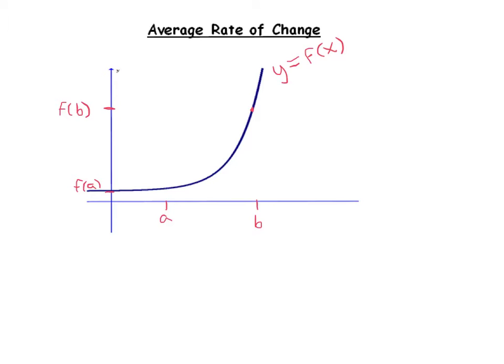This curve may represent many different things — it could be your position, it could be your velocity, it could be some other type of quantity that varies over time, or just varies with relation to another quantity. When I say average rate of change, what I'm looking at is the slope of this line here, which is called the secant line. So to determine the slope of this line, slope is your change in y divided by your change in x.